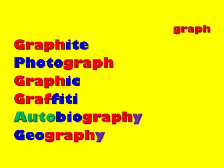Auto-biography contains three different roots, two of which come from our last unit: auto- meaning self, bio- meaning life, and graph- meaning to write or draw. An auto-biography is to write about the life of oneself. Geography contains two roots as well — geo means earth, and graph means to write or draw. Geography is basically the writing or drawing about the earth.